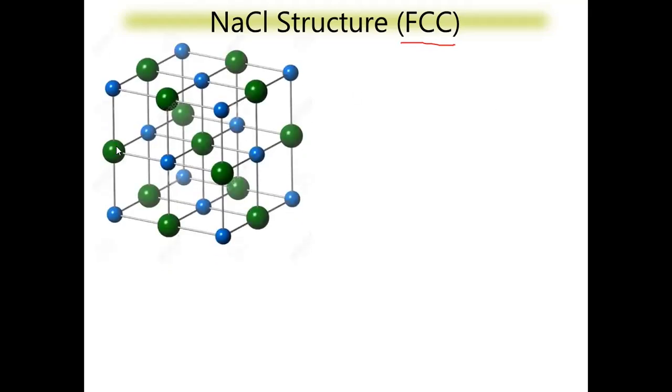Now we will see the complete detailed structures of NaCl, CsZn chloride, ZnS, Diamond, AB2, A2B, then spinal and anti-spinal. NaCl follows FCC structure. In the NaCl unit cell, green ions are the chloride ions which are bulkier in size, and blue ions are the Na⁺ ions.